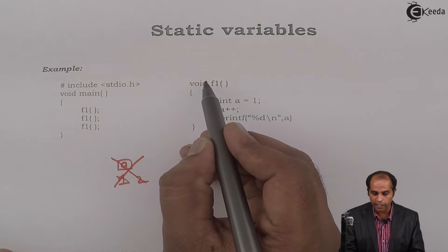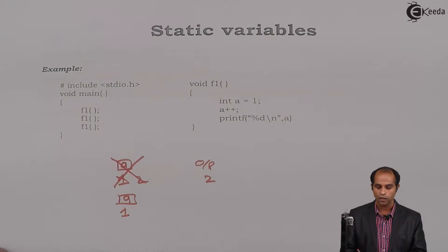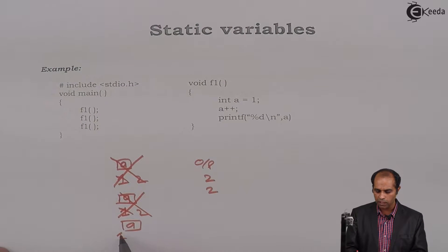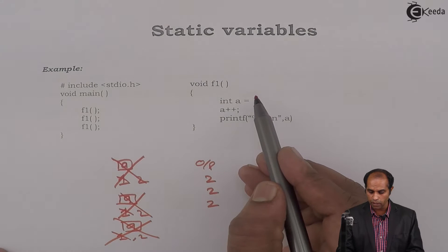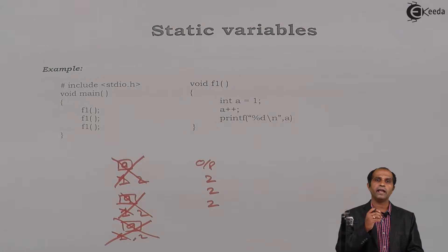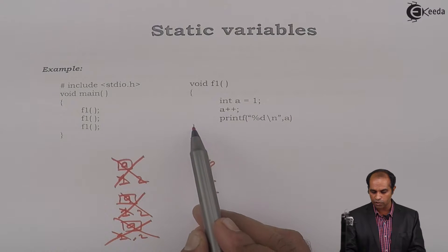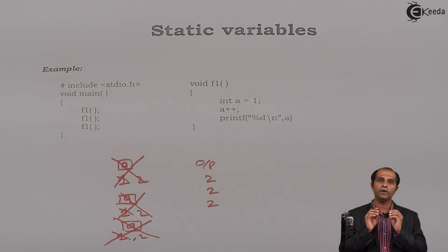When the function is called for the second time, A is created once more, again reset with the value 1, changed to 2, and the output is displayed as 2 again. When the function ends, the variable is destroyed, and the same thing happens for the third time — create A, set it to 1, change it to 2, display 2, and A is destroyed. So the output is 2, 2, 2, because variable A is created every time the function is called since it is a local variable. It is created every time F1 starts and destroyed automatically when F1 ends. If I call it 100 times, all 100 times A will have the value 2.